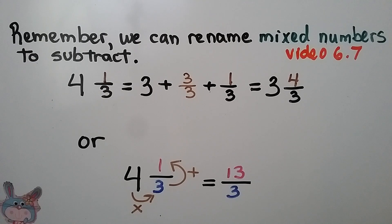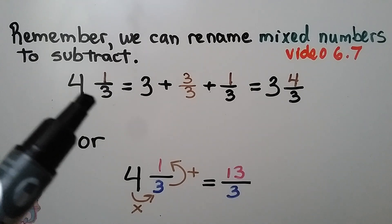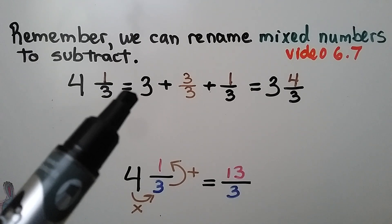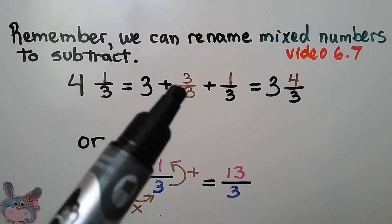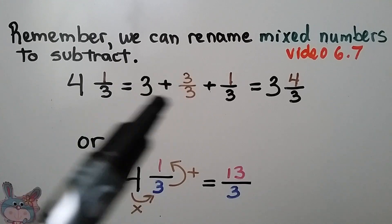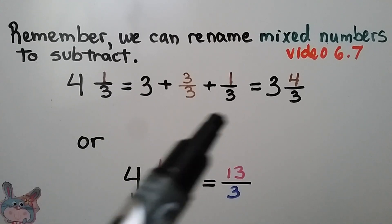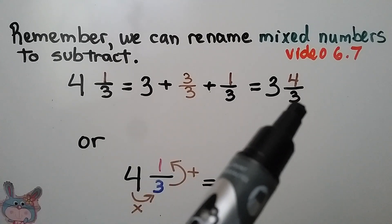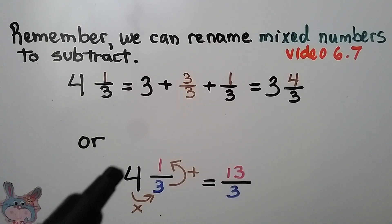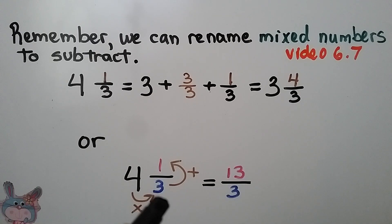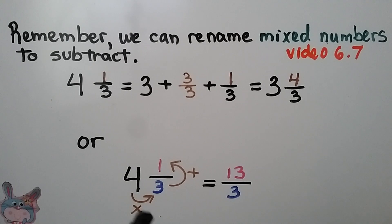As we learned in video 6.7, remember we can rename mixed numbers to subtract. If we have 4 and 1 third, we could rename it as 3 plus 3 thirds — because the numerator and denominator are the same, it's equal to 1 — so that would be 3 plus 1, making our 4. Then we have our 1 third, and we can add these together to get 4 thirds, giving us 3 and 4 thirds. We can also convert the whole thing into a fraction greater than 1 by multiplying the whole number by the denominator: 4 times 3 is 12, add the numerator to get 13, giving us 13 thirds.